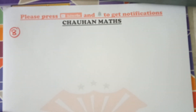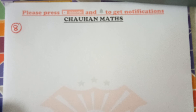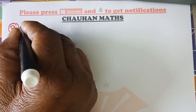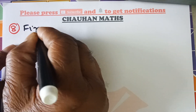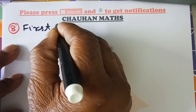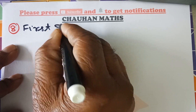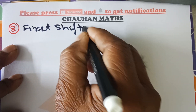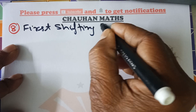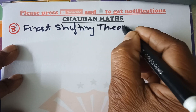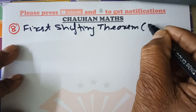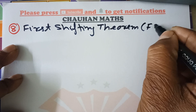Now we have formula number 8, which is the First Shifting Theorem (FST) based formulae. The first shifting theorem, in shortcut FST.